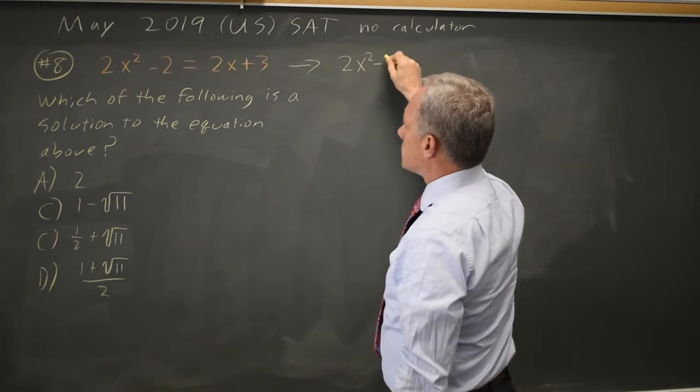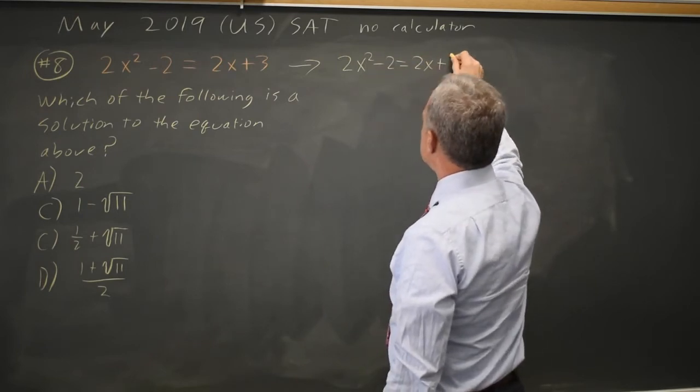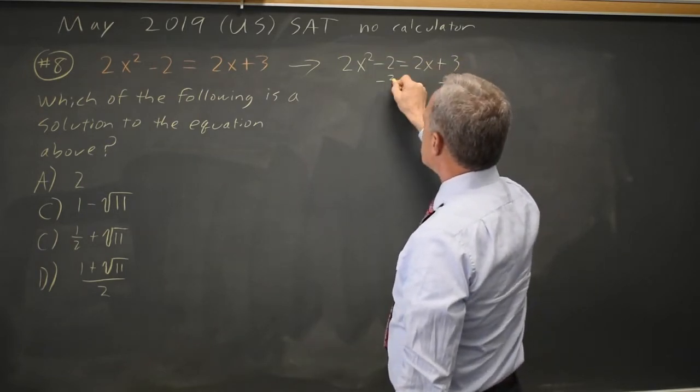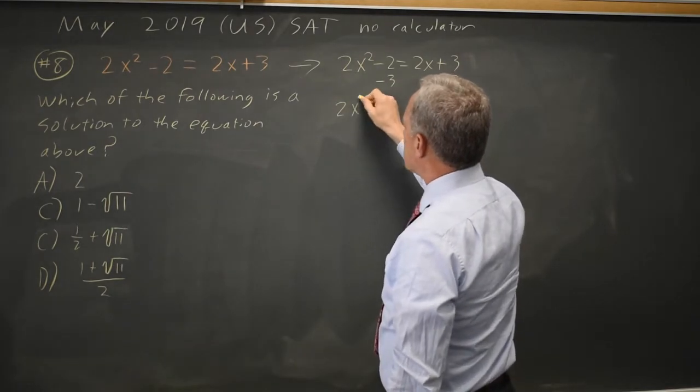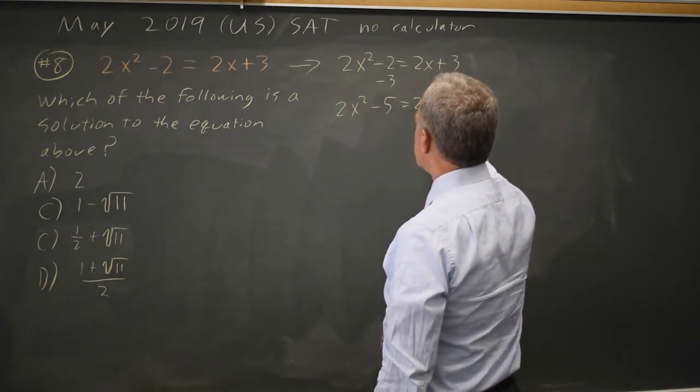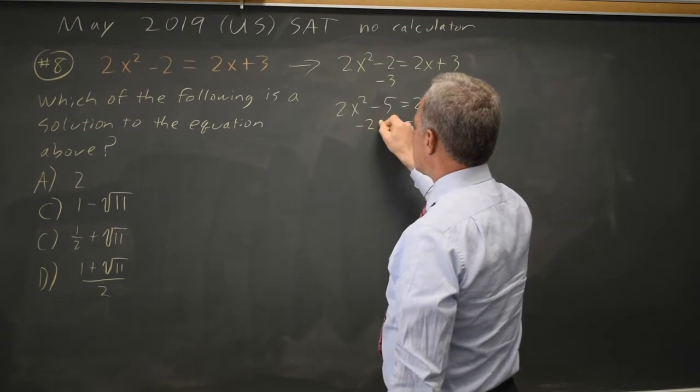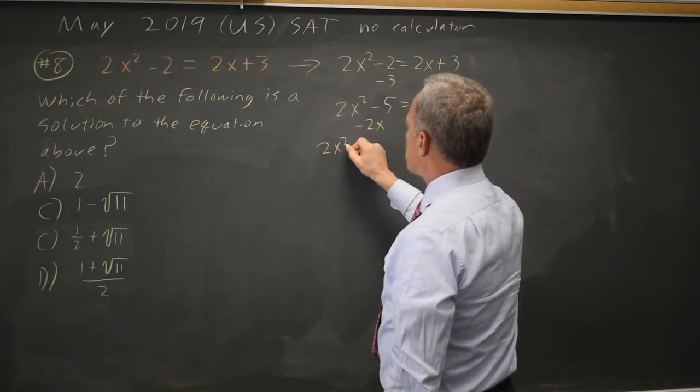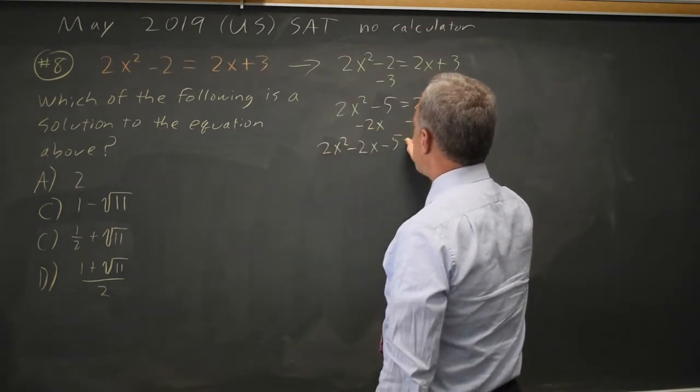2x squared minus 2 equals 2x plus 3. I'll subtract 3 from both sides. 2x squared minus 5 equals 2x. Subtract 2x from both sides. 2x squared minus 2x minus 5 equals 0.